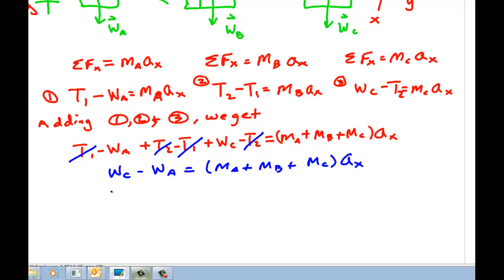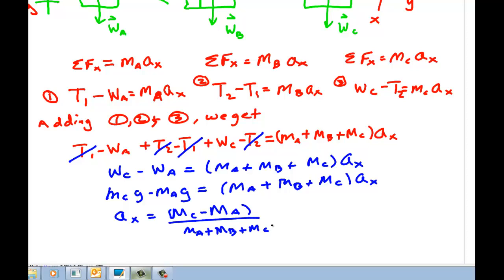I'm going to write this as M_C g minus M_A g is M_A plus M_B plus M_C times a_X. And that says that a_X is equal to mass C minus mass A over the total mass M_A plus M_B plus M_C times g. And so that's my final formula. And the rest is just plugging numbers.